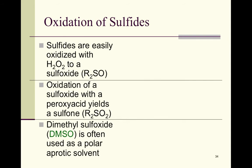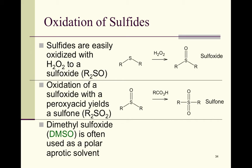Sulfides are easily oxidized with hydrogen peroxide to form a sulfoxide — a new functional group where sulfur has four bonds. Further oxidation of a sulfoxide with a peroxy acid yields a sulfone, where sulfur has six bonds (an expanded octet). Dimethyl sulfoxide (DMSO) is a well-known example of a sulfoxide, often used as a polar aprotic solvent. Know the name, structure, and abbreviation DMSO. Coming up next: review pages 743–752 in your textbook for a preview of carbonyl compounds between Chapters 18 and 19.